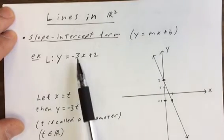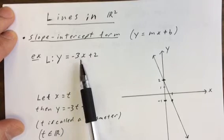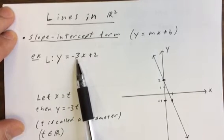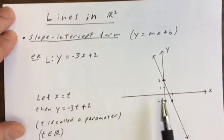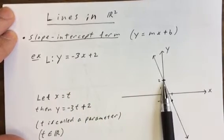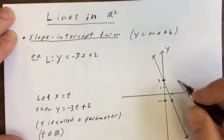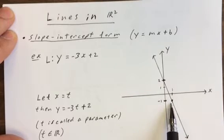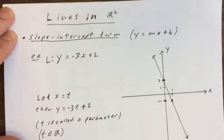We use the slope to get a second point. If we have any two points on a line, we can draw it. The slope is rise over run: negative 3 over 1. So we drop 3 from the y-intercept and run 1, giving us the next point at (1, negative 1). Now that we have two points, we draw the line through them.